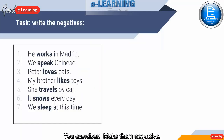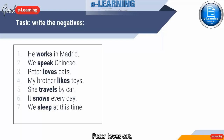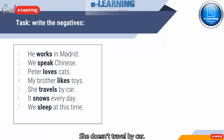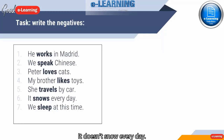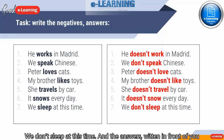Exercise: make them negative. He works in Madrid — he doesn't work. We speak Chinese — we don't speak Chinese. Peter loves candy — Peter doesn't love candy. My brother likes toys — my brother doesn't like toys. She travels by car — she doesn't travel by car. It snows every day — it doesn't snow every day. We sleep at this time — we don't sleep at this time. The answers are written in front of you.